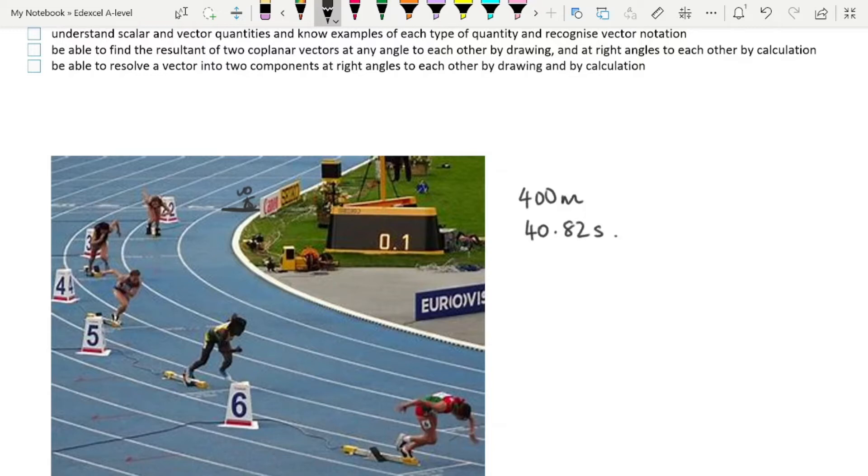So the distance that she travels is 400 meters, and she does it in 40.82 seconds. A typical question you might ask yourself is, what is her speed? The problem is, that is too basic a question here, because we can't say what her speed is with just that information. Her speed is not constant as she runs around this track. What we can do is we can say what her average speed for the whole trip was. And that's simple enough, it is distance divided by time, and so we would simply find the answer of 400 meters divided by 40.82 seconds.